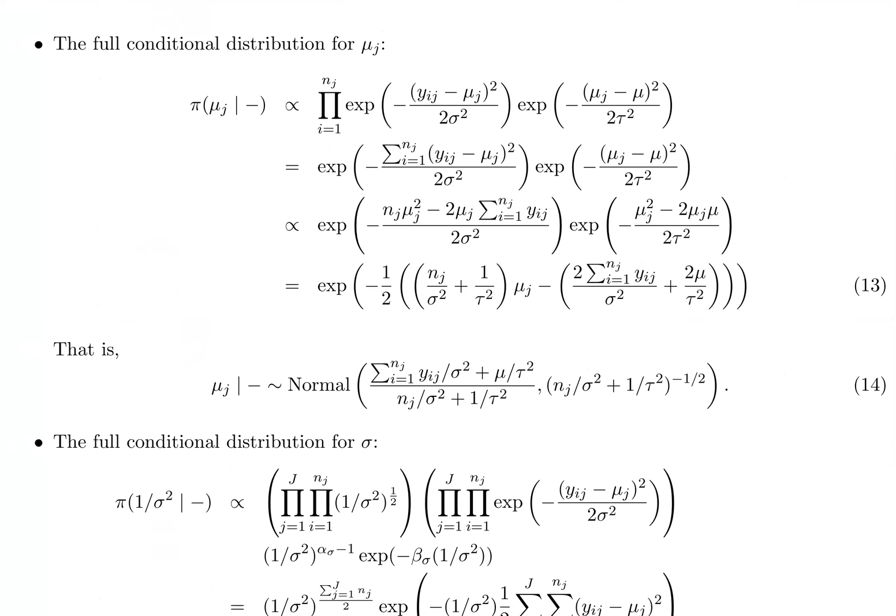The document will walk you through step by step, but for us, let's focus on looking at the results. The result for mu_j, if you remember what we did, is equation 14. This is the full conditional posterior distribution for mu_j.